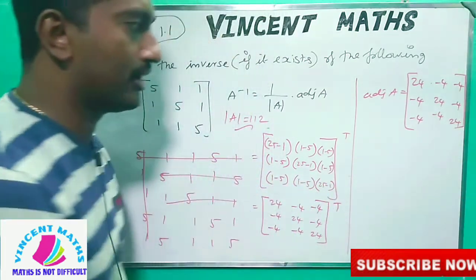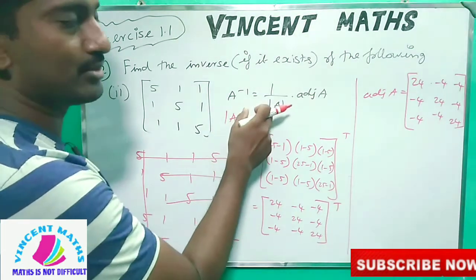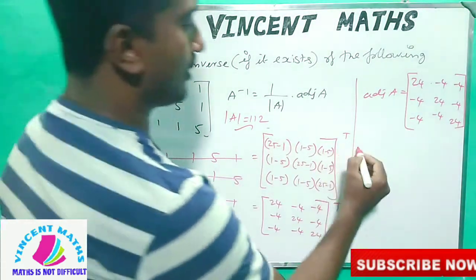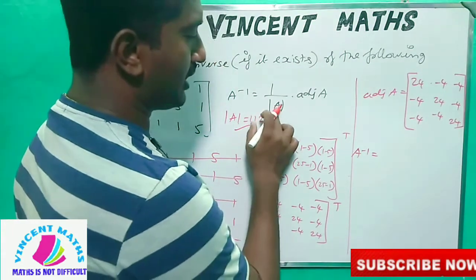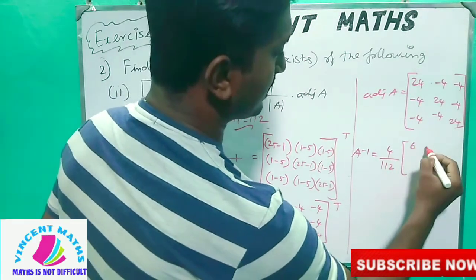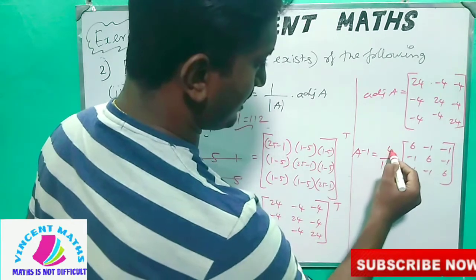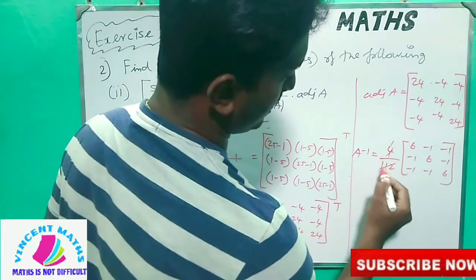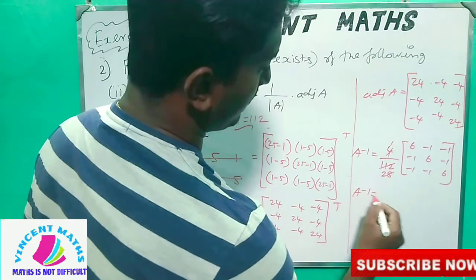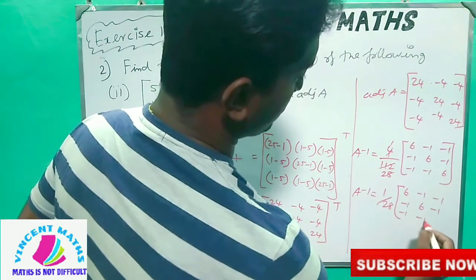Now we have the adjoint of A value. Next, we substitute into A inverse. We know the determinant of A is 112. A inverse equals 1 over 112 into [24, minus 4, minus 4; minus 4, 24, minus 4; minus 4, minus 4, 24]. We can factor out 4, giving 4 by 112, which simplifies. Then: 1 by 28 into [6, minus 1, minus 1; minus 1, 6, minus 1; minus 1, minus 1, 6].